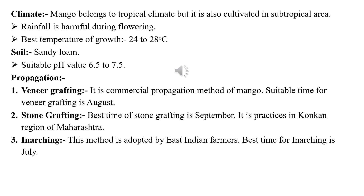Polyembryony is generally found in South Indian varieties and mostly in non-commercial varieties. In North Indian varieties, generally only monoembryonic nature is found. Mango belongs to a tropical climate but is also cultivated in subtropical areas and semi-temperate regions like Uttarakhand, Uttarpradesh, and north Punjab. Rainfall is harmful during flowering because mango suffers from flower and fruit drop.